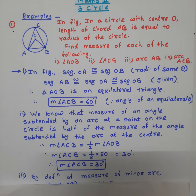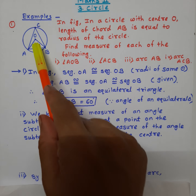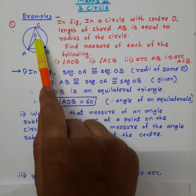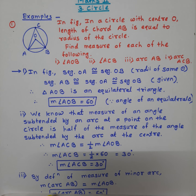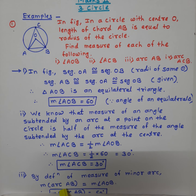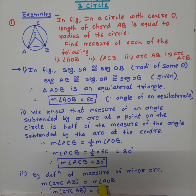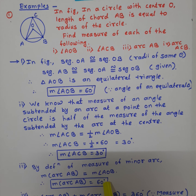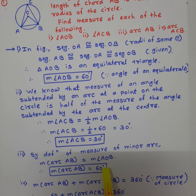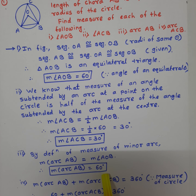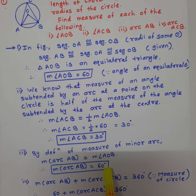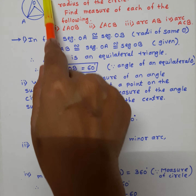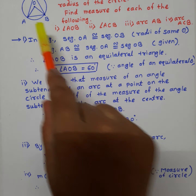The measure of a minor arc is always equal to the measure of its central angle. Therefore, minor arc AB is equal to the measure of angle AOB. Angle AOB is equal to 60 degrees, and therefore arc AB is equal to 60 degrees. Now the third part: find the measure of arc ACB.